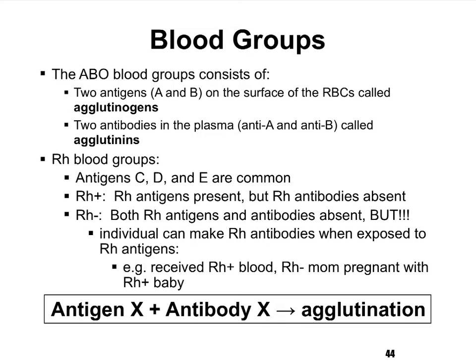Within the rhesus blood group, we actually have subgroups where we see C antigens, D antigens, E antigens, and even more. But the CDE ones are some of the more common ones, which is what we tend to focus on. At times you may see that your book or an image will refer to anti-E or anti-D. These are referring to the rhesus blood group's antigens.